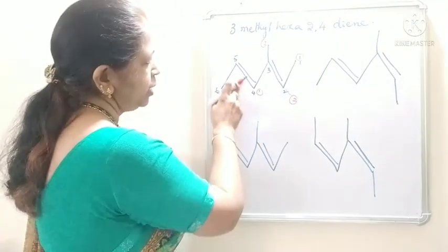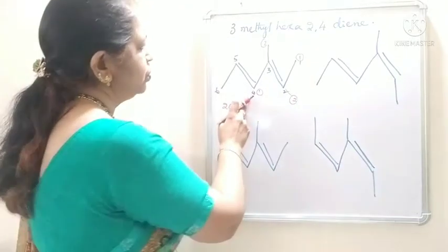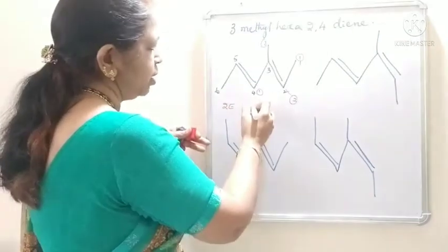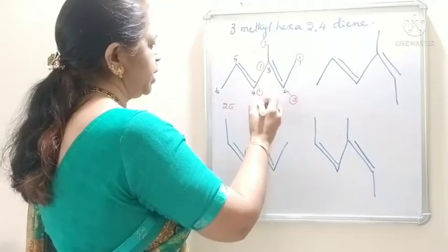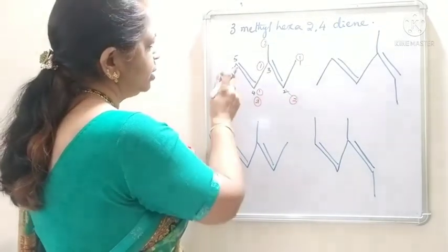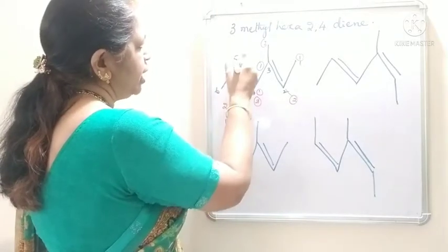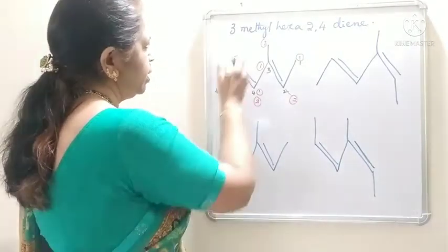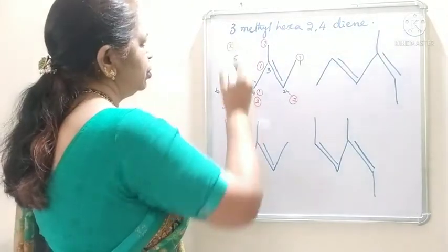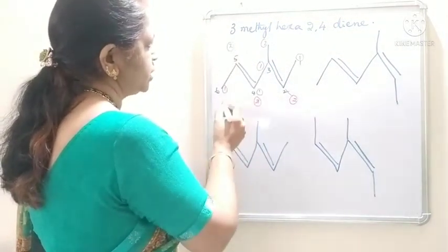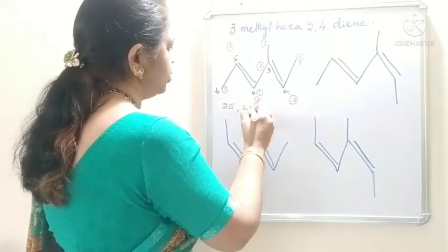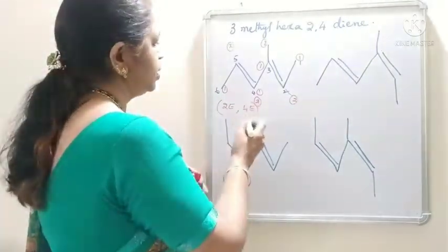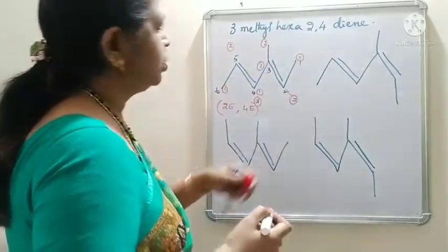If we consider the double bond at 4 and 5: at fourth carbon, this entire group is lying on the upside and hydrogen on the downside. So first priority goes to upside and second goes to down. At the fifth carbon, hydrogen is lying upside and this methyl group is lying downside. So first priority is downside and hydrogen is upside. The first priority groups are lying on the opposite side. So, it is 4E — giving us (2E,4E)-3-methylhexa-2,4-diene.